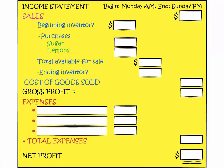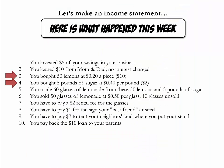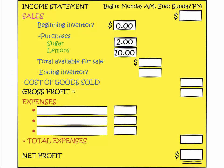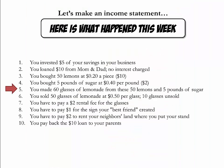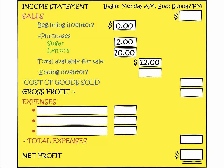The next item: you bought lemons for $10 and sugar for $2. Since purchasing inventory is a cost to produce our goods that affects our earnings, this item does belong on the income statement. We can add $2 for the sugar and $10 for the lemons under purchases. Since we did not have any inventory at the start of this week, we can fill out a zero for beginning inventory. You then made 60 glasses of lemonade from your entire inventory, so we have our entire inventory, which cost $12, available for sale as finished goods.